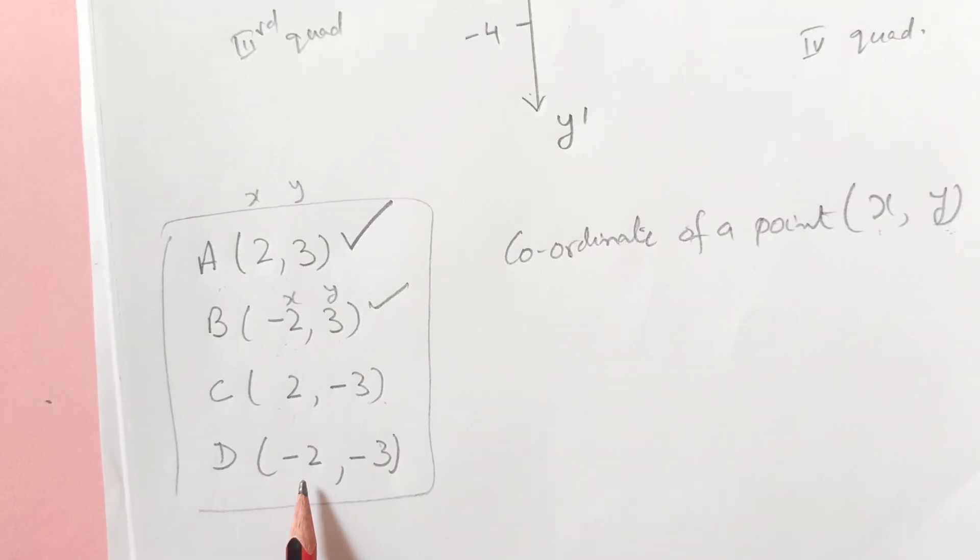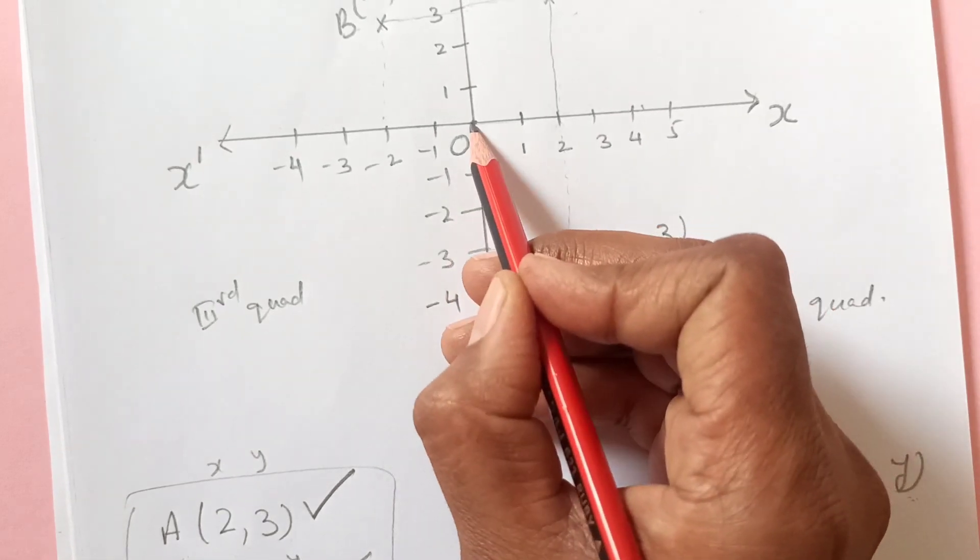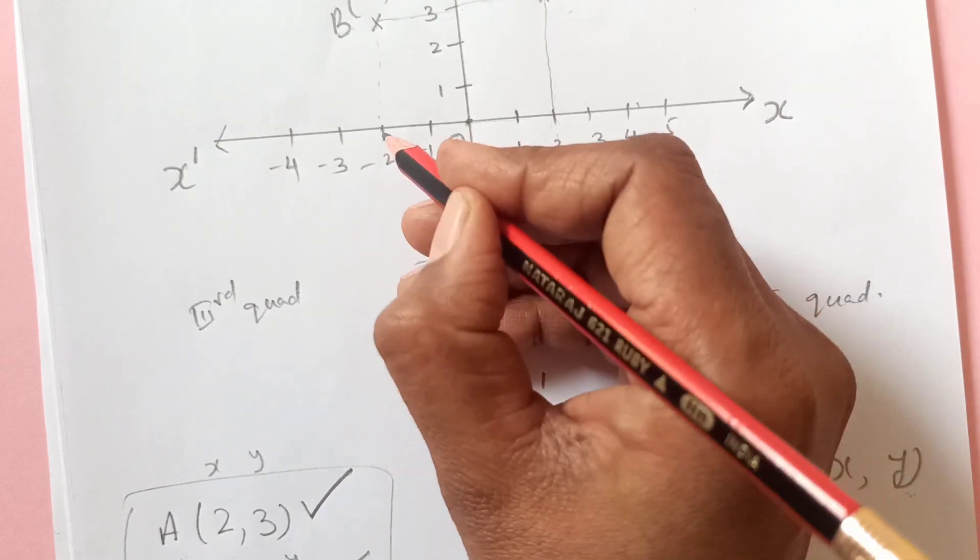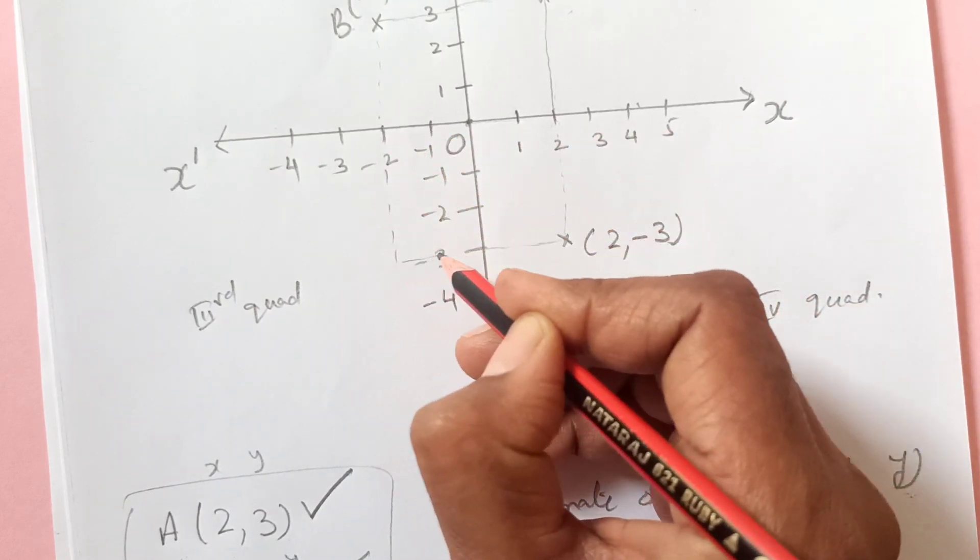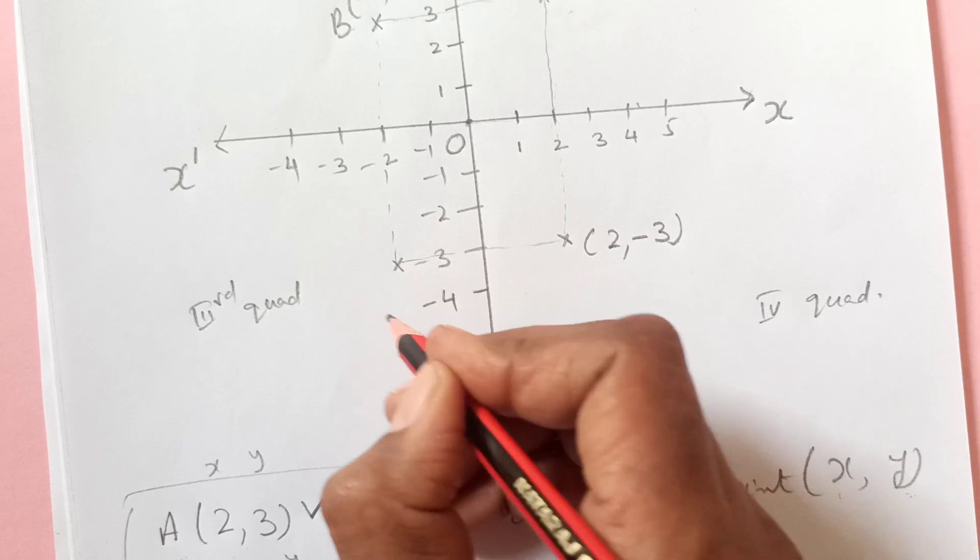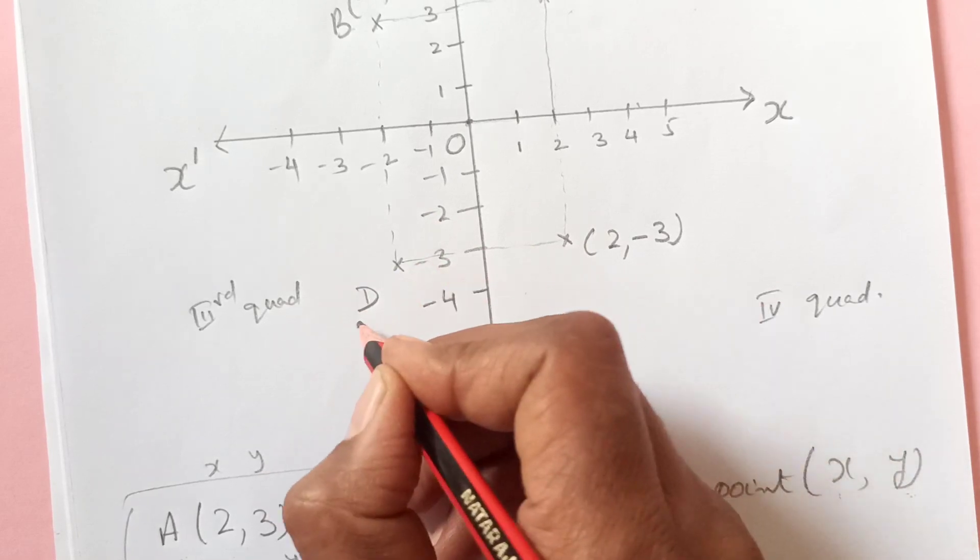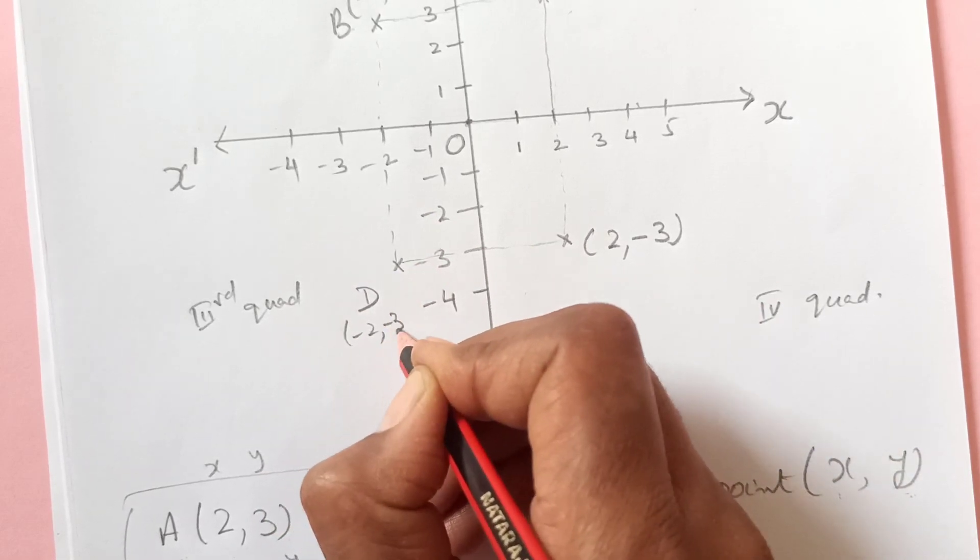Now point D we have (-2, -3). So negative 2. Again start from origin, negative 2 and then we have negative 3. Going down here we have this point which is D, (-2, -3).